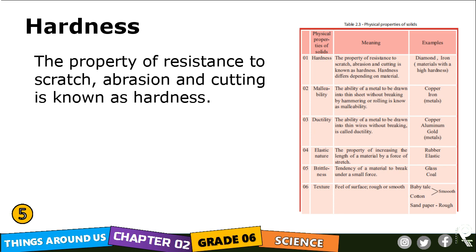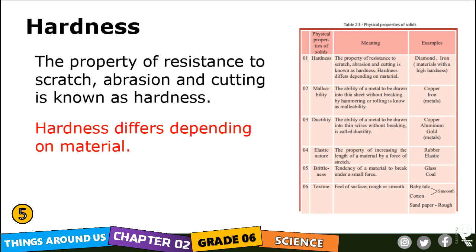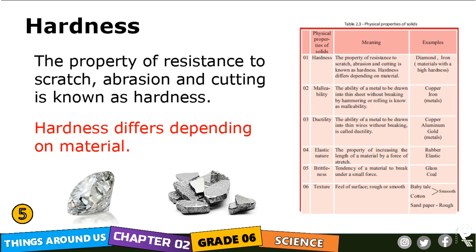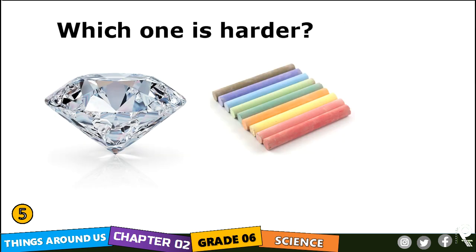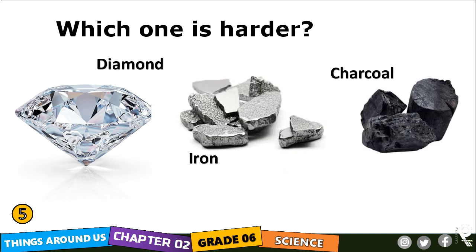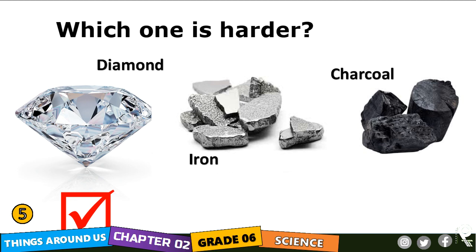What is hardness? The property of resistance to scratch, abrasion, and cutting is known as hardness. Hardness differs depending on materials. Diamond and iron are materials with high hardness — they are hard solids. If a chalk and a diamond are in front of you, which one is harder? Diamond — that is right. Hardness differs from one material to another material.